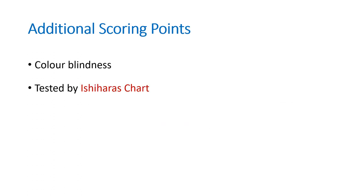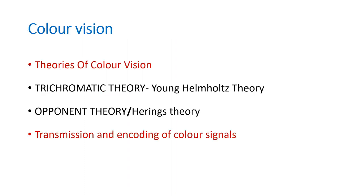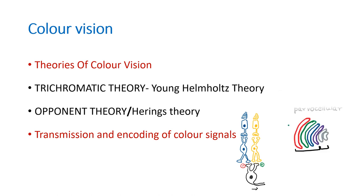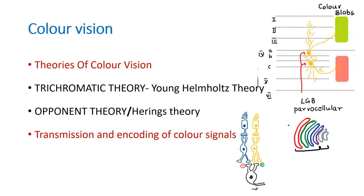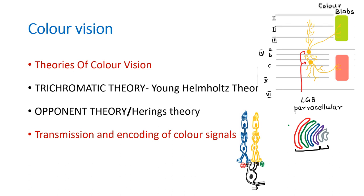Color blindness can also be mentioned, which is tested by Ishihara's chart. In summary, we covered the trichromatic theory and opponent theory of color vision, and how color signals are transmitted and encoded — from the cones and P ganglion cells through the LGB to the cortex. This is what you need to know for the exam.